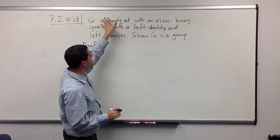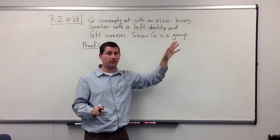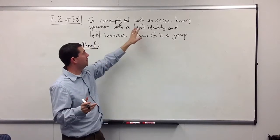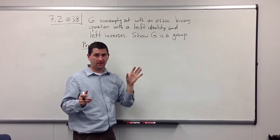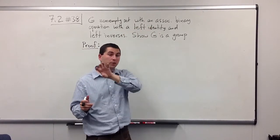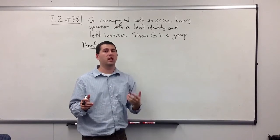So we're given this non-empty set. It has an associative binary operation. Good so far. And then we're told that we have what amounts to a left identity. That is, there's some element, and we multiply things on the left by it, it won't change them.